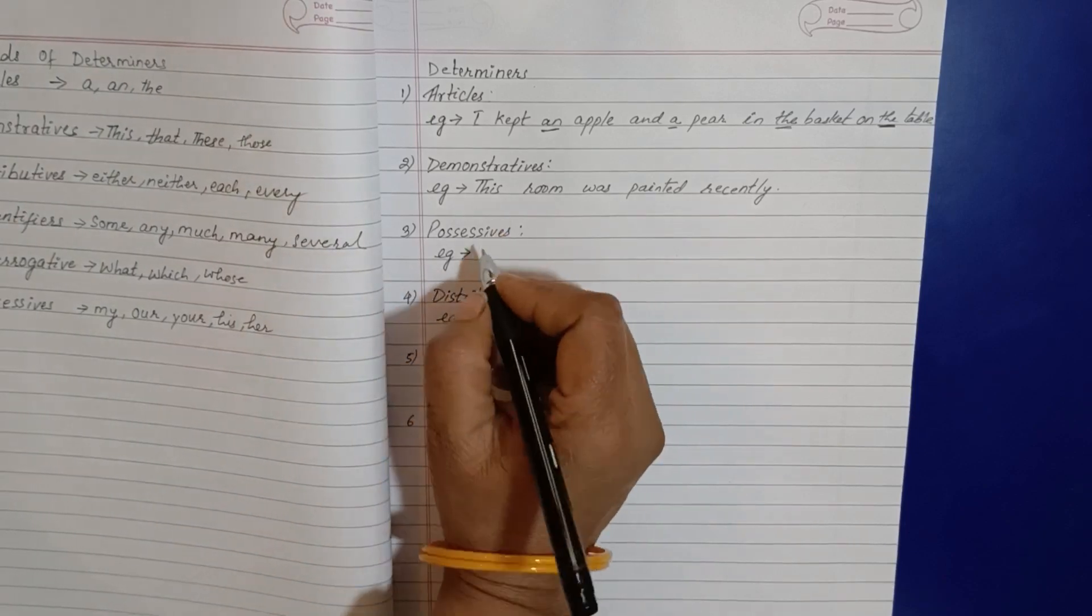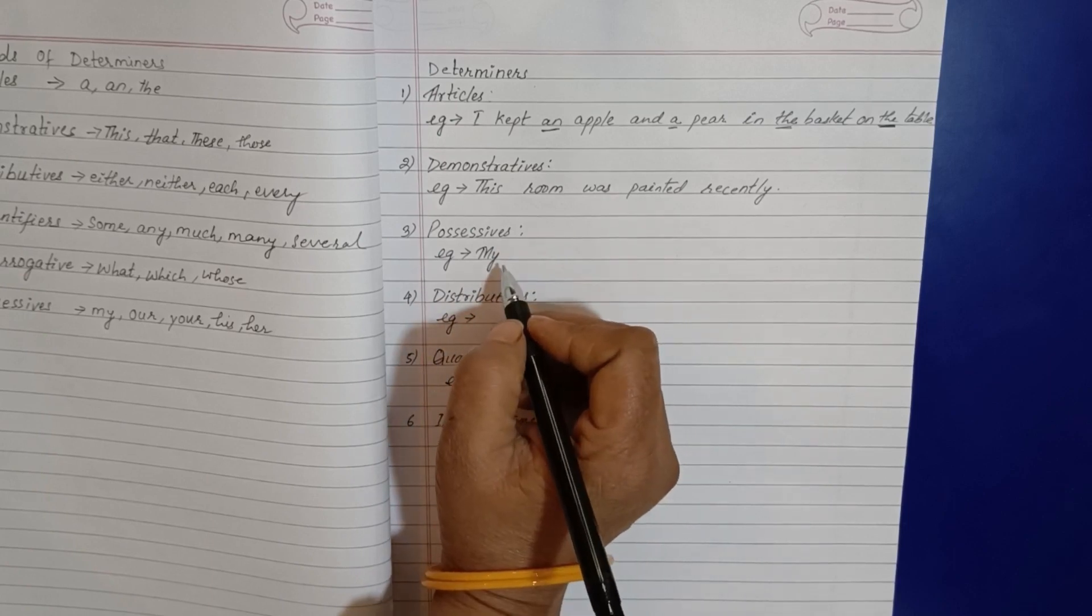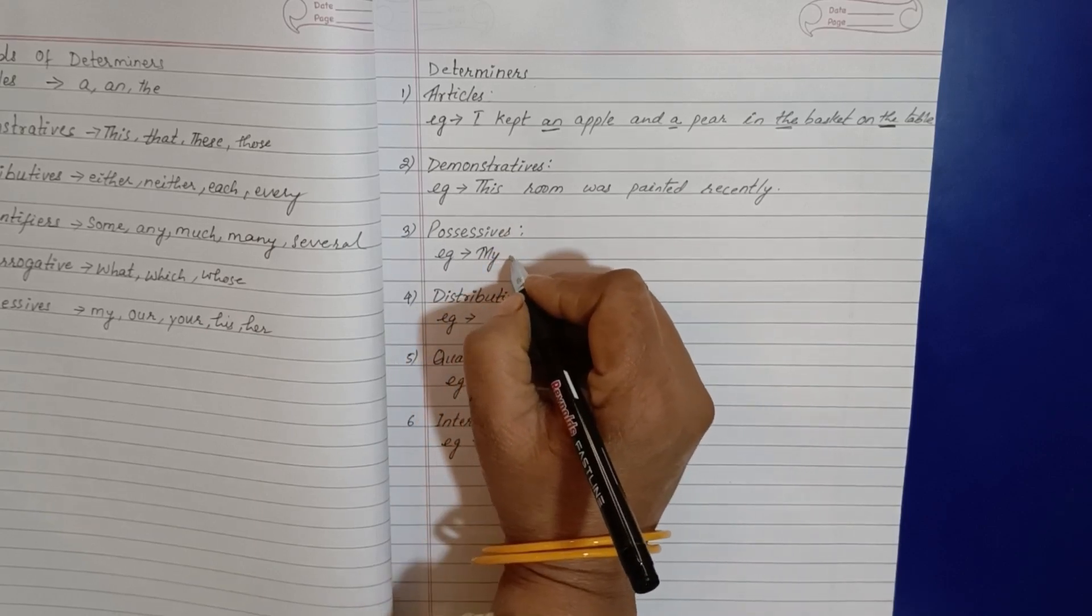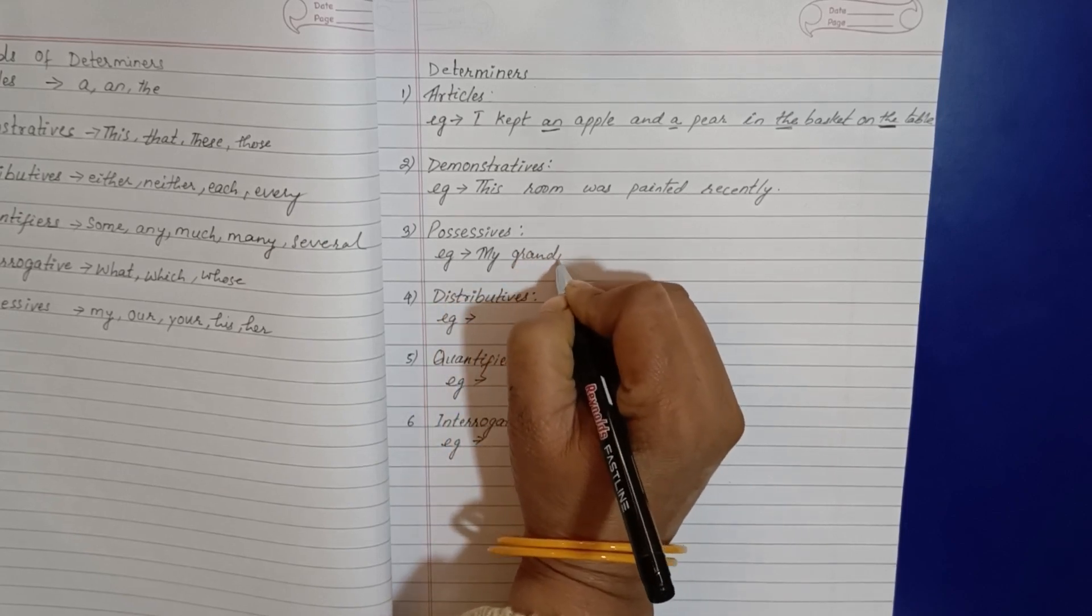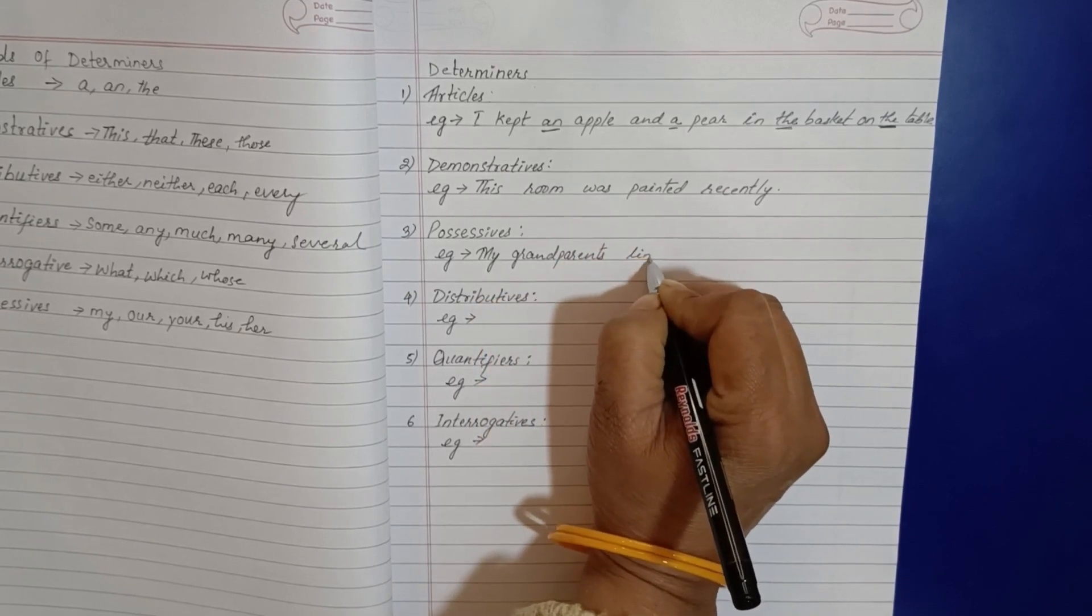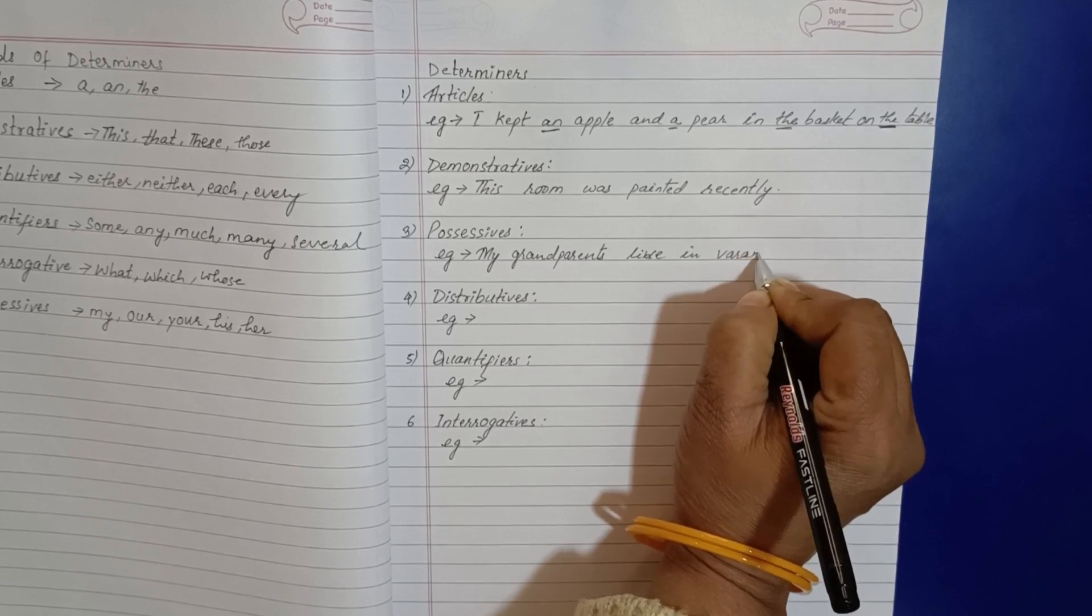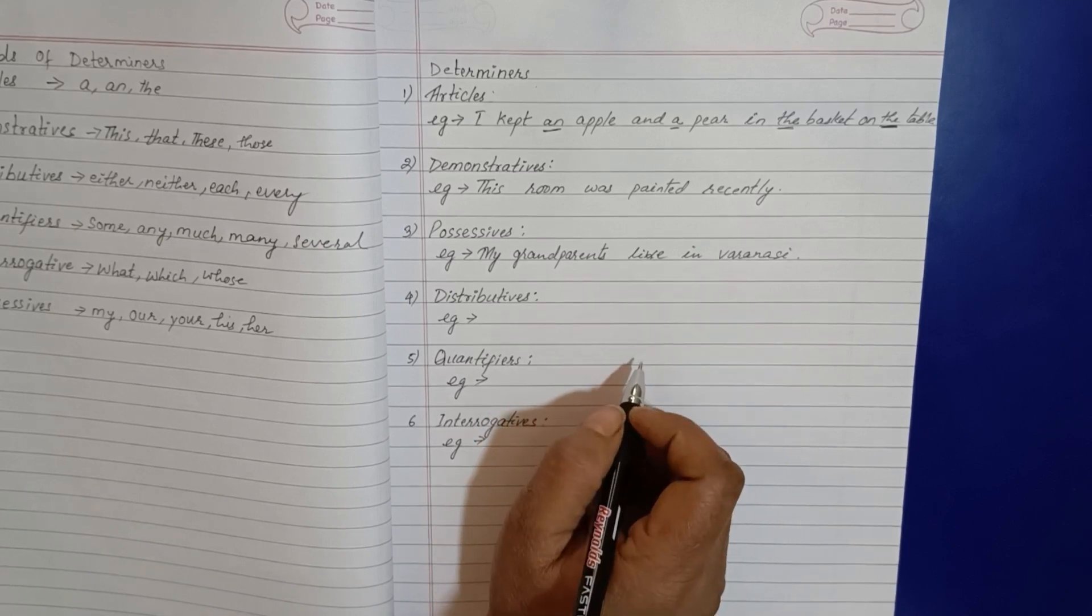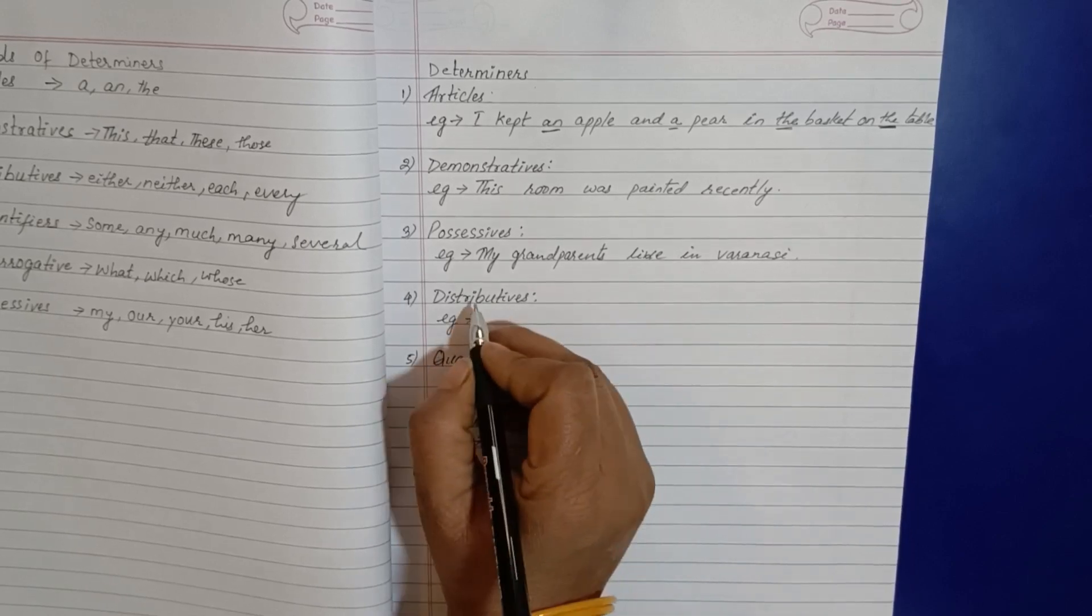In possessive what is there - my, our, your, his, her. So my grandparents live in Varanasi. My grandparents live in Varanasi.